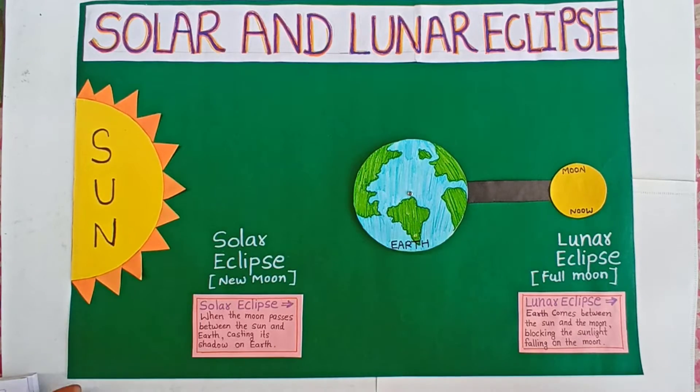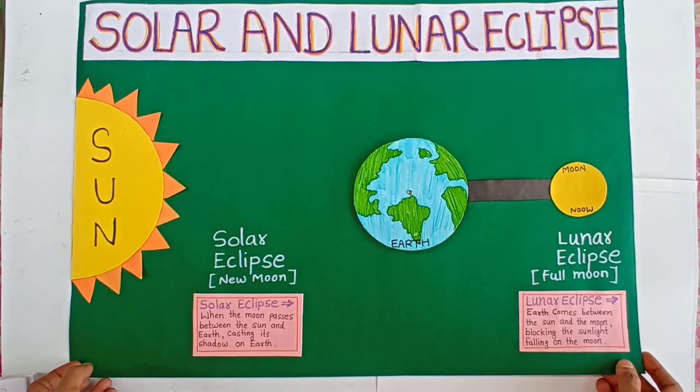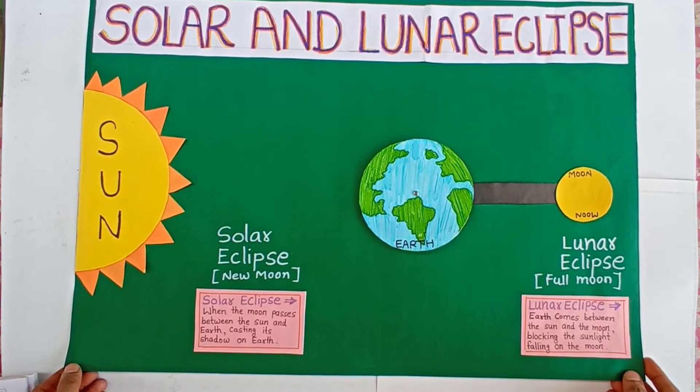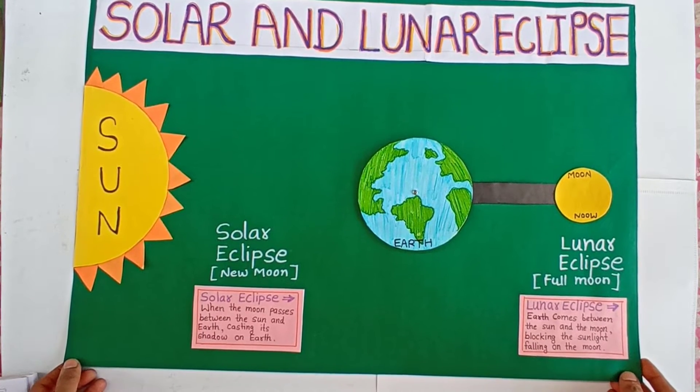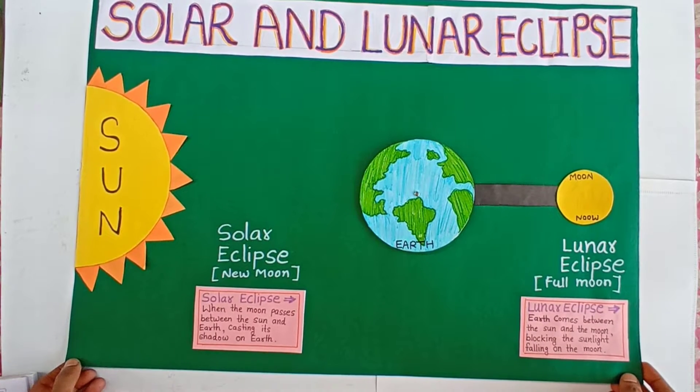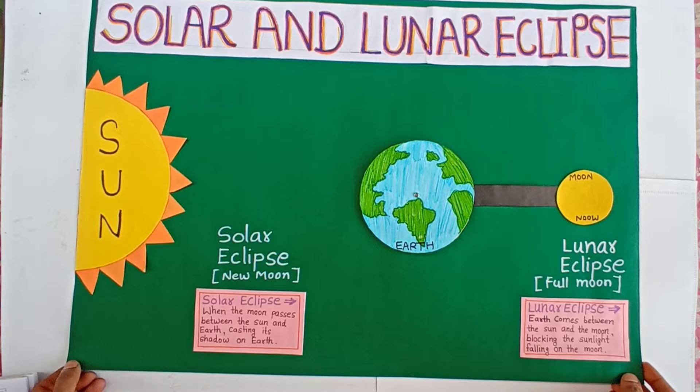Today I made a project on Solar and Lunar Eclipse. An eclipse happens when one astronomical body blocks light from the sun to another.